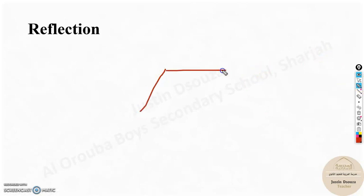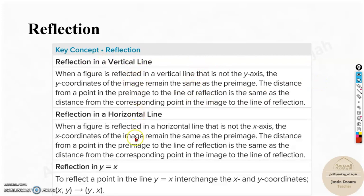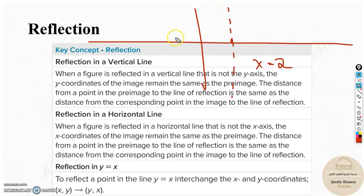Now about reflection. Reflection can be done in different lines: vertical line, horizontal line, and y equals x. It can be any vertical line. Imagine they ask you to reflect along a vertical line, say x equals 2. You need to draw a line, and if there is a figure like this, it must be reflected over here.